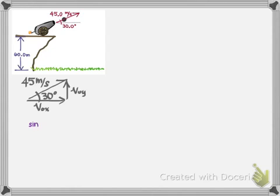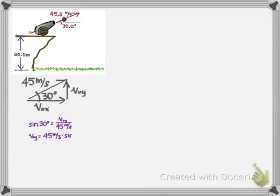Using trigonometry, the sine of 30 degrees equals the opposite over the hypotenuse. The opposite side is the initial velocity in y, and the hypotenuse is 45 meters per second. So it equals v₀y divided by 45. Multiply both sides by 45 and you solve for v₀y. The initial velocity in the y direction is 45 times the sine of 30 — make sure you're in degree mode — and you get 22.5 meters per second.